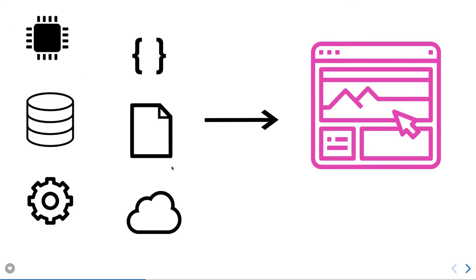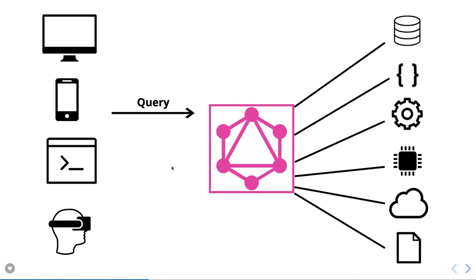From the client side you send a query; the GraphQL server receives it and can fetch data from anywhere — an HTTP call, a database, REST APIs, files, anywhere. This is essentially Node.js code underneath the GraphQL server, and using Node.js you can talk to external APIs, databases, file systems, cloud servers, anything.